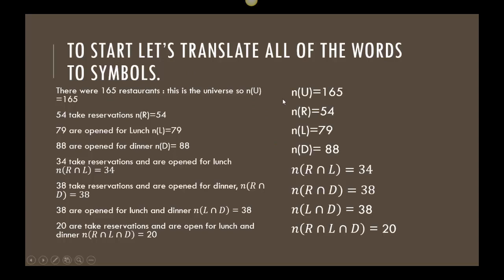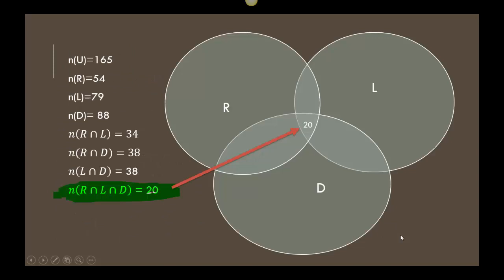So here's how I turn this into symbols. So the first one is there's 165 restaurants. That's my universe. We called reservations R. That was 54. We called lunch L. That's 79. We called dinner D. So there's my n(D) is 88. Then I started looking at these intersections and the word 'and' is what's really important, that's what I need to put as my connection here. So R and L was 34. R and D was 38. L and D was also 38. And then all three was 20.